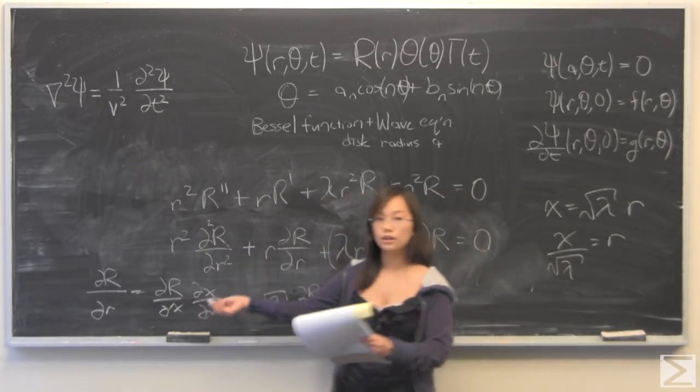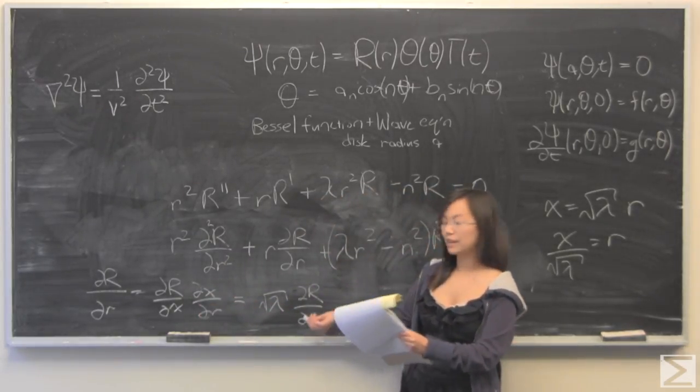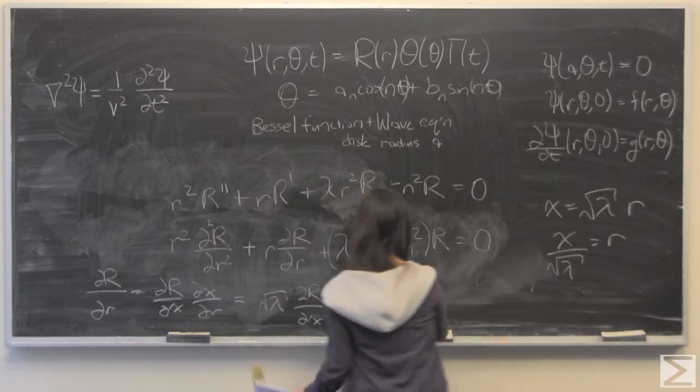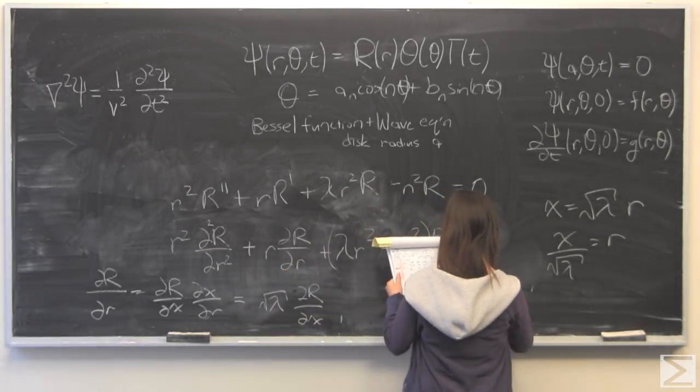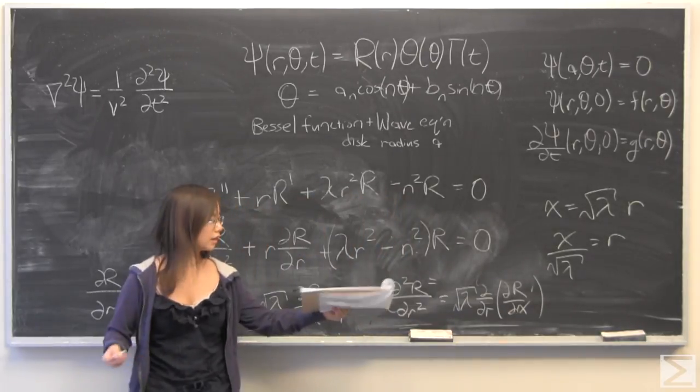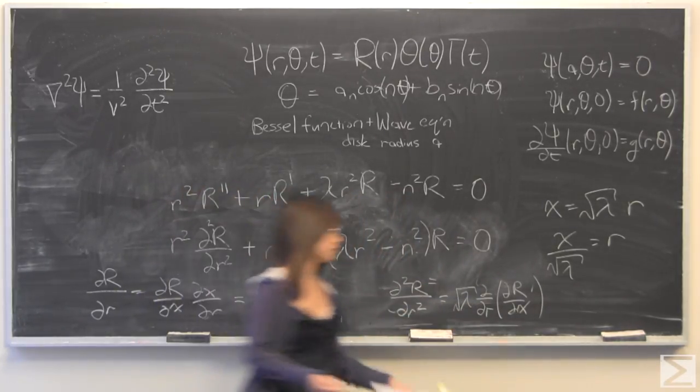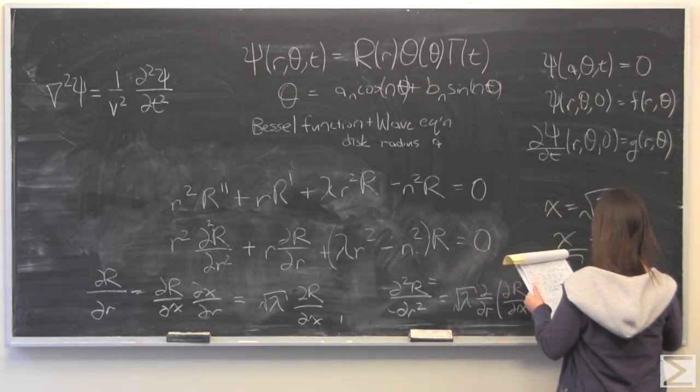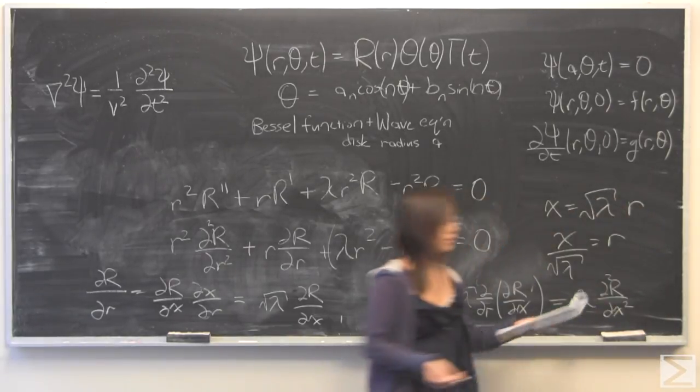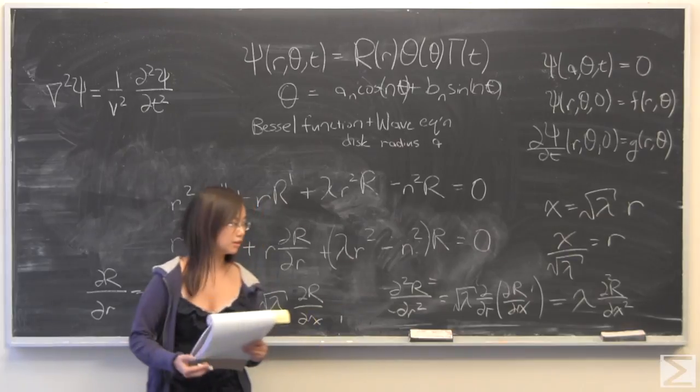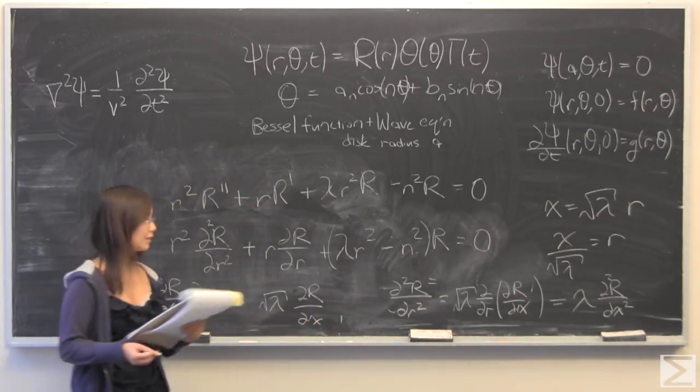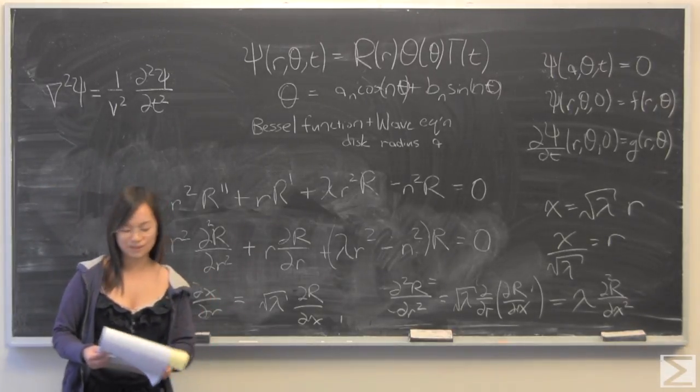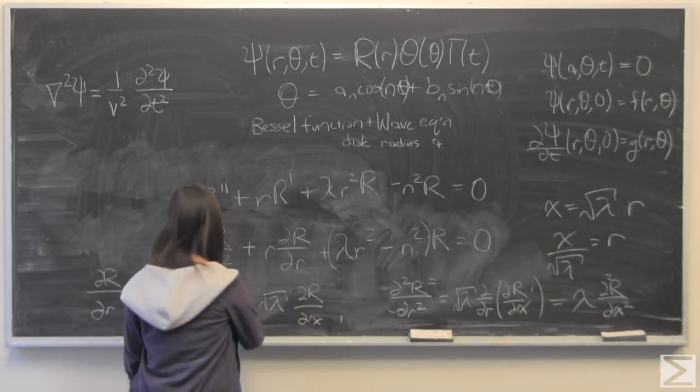If you want to substitute for partial of r with respect to little r, you get this square root of lambda partial of r with respect to x. For the second derivative, same story, you would just take another partial with respect to r, repeat the same process. You just pull out another square root of lambda, multiply that by square root of lambda, you get lambda. You also get a second partial with r with respect to x squared. Plugging that back in will give us a very easy thing to look at.